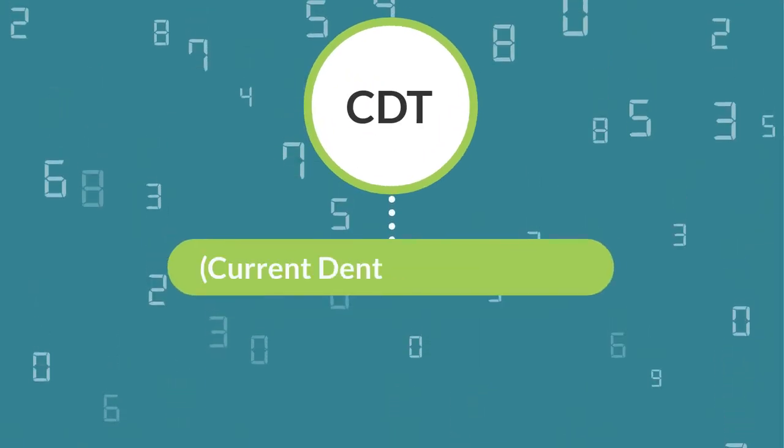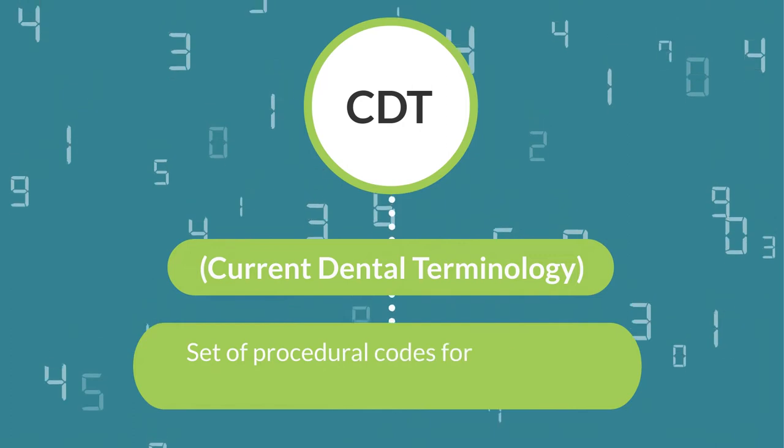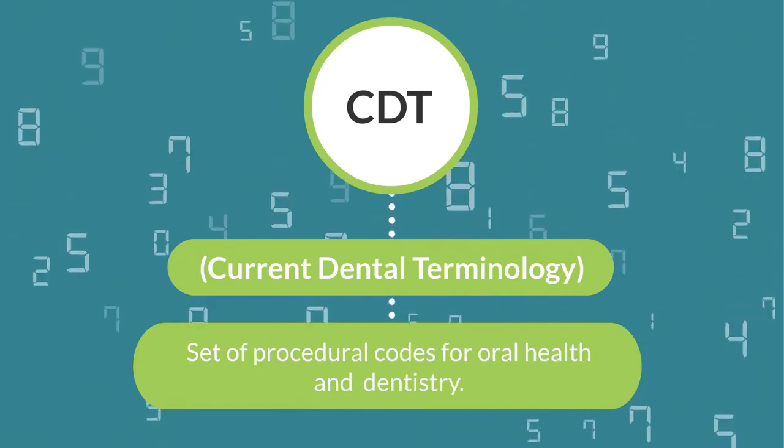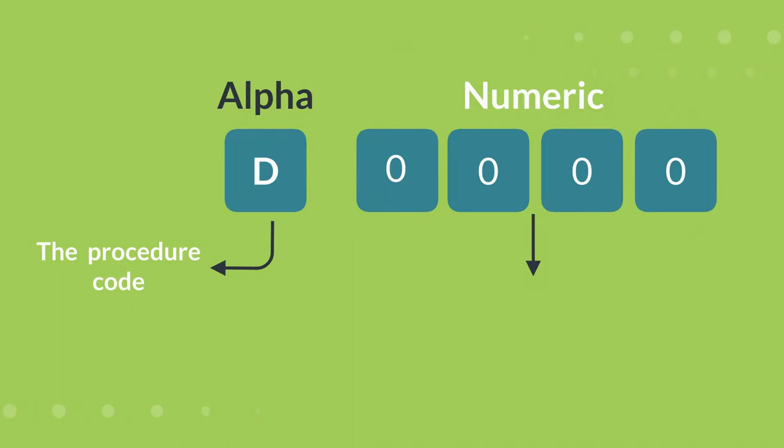The CDT (Current Dental Terminology) is a set of procedural codes for oral health and dentistry. Each code is alphanumeric, beginning with the letter D (the procedure code) and followed by four numbers (the terminology).